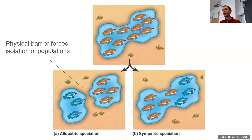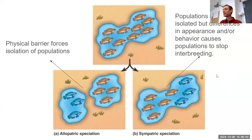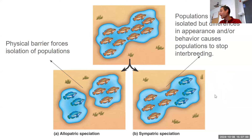To summarize: in allopatric speciation, a physical barrier forces isolation of populations. In sympatric speciation, populations are not physically isolated, but differences in appearance or behavior cause them to stop breeding. A behavioral example is when part of a population evolves to be nocturnal while another remains diurnal — they simply never interact and eventually speciate.